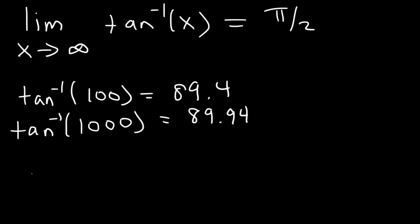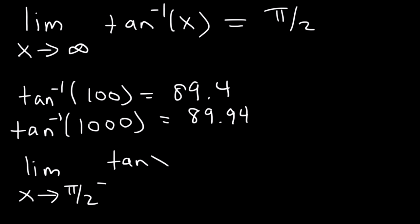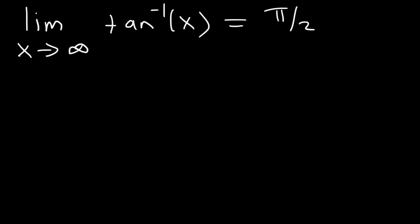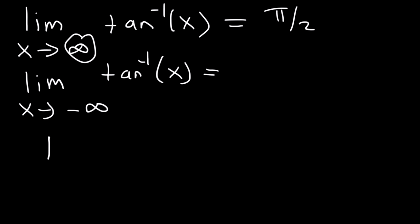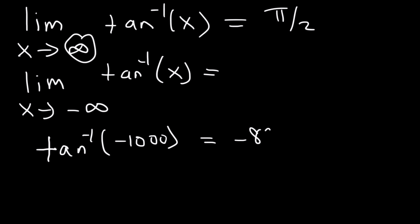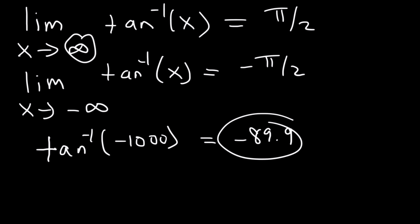If you recall, the limit as x approaches pi over 2 from the left side of tangent x equals infinity. So when dealing with inverse tangent, you need to switch those two values. Now what is the limit as x approaches negative infinity of the arctangent function? If we plug in arctan of negative 1,000 in degree mode, this is going to be negative 89.9. So this is negative pi over 2, or basically negative 90. Tangent is negative in quadrants 2 and 4, but arctan only exists in quadrants 1 and 4, which is why we get the answer in quadrant 4. Make sure you know these values.